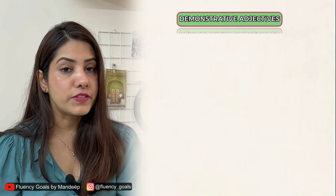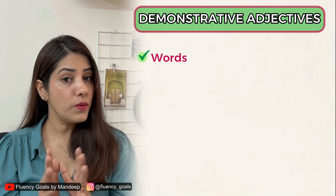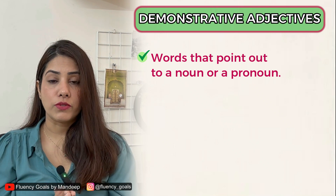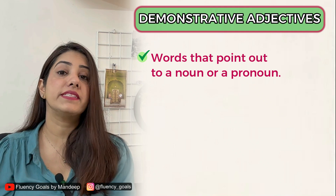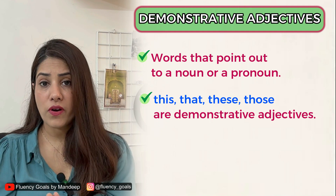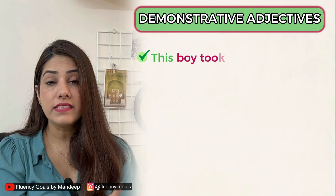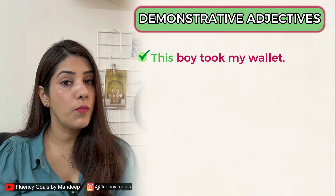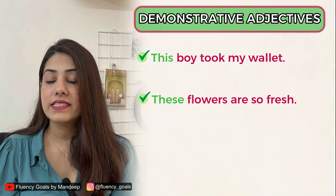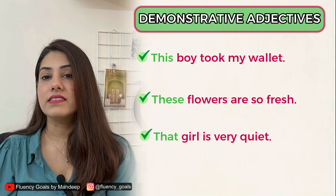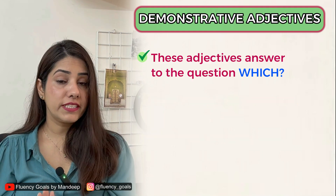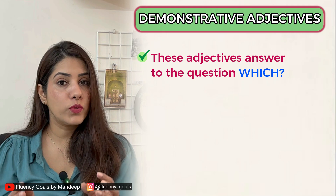Moving on to demonstrative adjectives. 'Demonstrate' means to point out. When a word points out to a noun — telling you which noun, which person, which thing — it is a demonstrative adjective. The words this, that, these, and those are demonstrative adjectives. Examples: 'This boy took my wallet', 'These flowers are so fresh', 'That girl is very quiet.' Demonstrative adjectives answer the question 'which?'